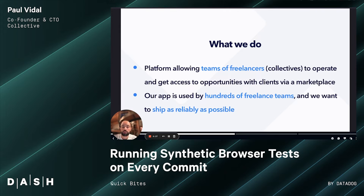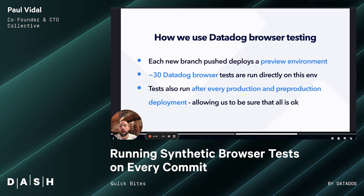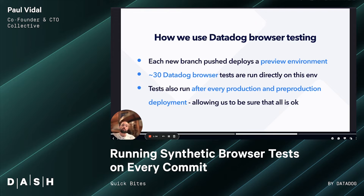Our app is used by hundreds of freelance teams and we want to ship as reliably as possible to make sure everything works. So how do we use Datadog browser testing? We're huge fans of it. Each new branch push deploys a preview environment — every time we push code via PR on GitHub, we deploy a preview environment, and on it, 30 Datadog browser tests written by us run directly to check if everything is safe. Every time we deploy to pre-production and production, we run those tests too. So when we have a pull request, when we deploy to pre-production, when we deploy to prod, everything is in order and all our critical paths are tested.